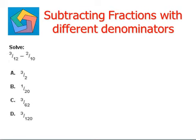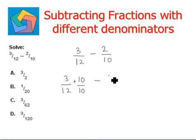Let's look at the next question. Solve 3 12ths minus 2 10ths. Now the rule remains the same, we have to make the denominator the same. We do that by multiplying the first fraction with the denominator of the second fraction, that is 10, minus 2 10ths as it is. Multiply and divide the second fraction with the denominator of the first, that is 12.